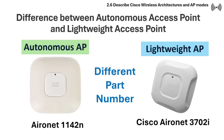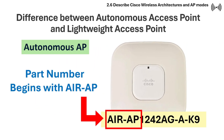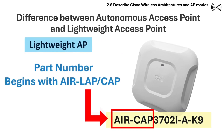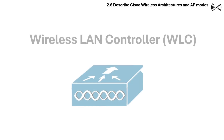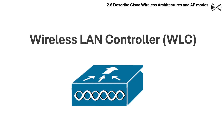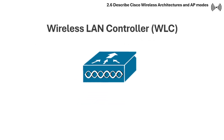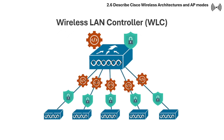APs and LAPs have different part numbers so people can differentiate between the two during the ordering process. Autonomous APs use part numbers beginning with AIR-AP, while lightweight APs, also known as LAP or CAP, begin with AIR-LAP. Another component of the lightweight AP architecture is the wireless LAN controller, or WLC — a separate physical appliance that centrally manages and controls multiple lightweight access points in a network, streamlining configuration, security, and performance.